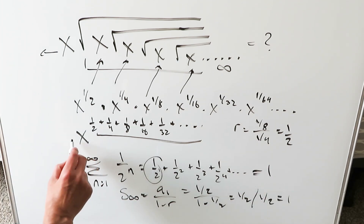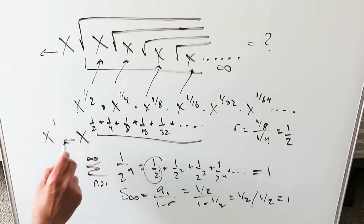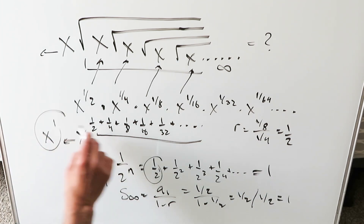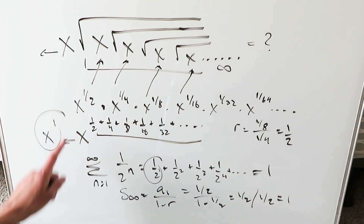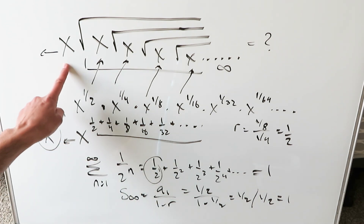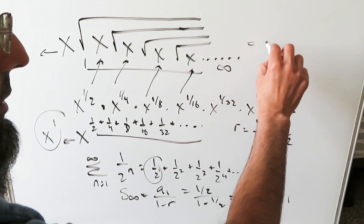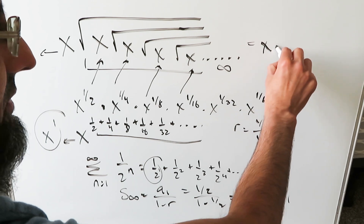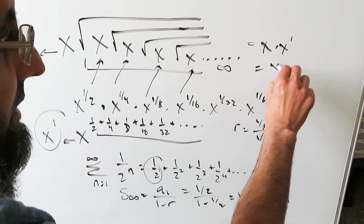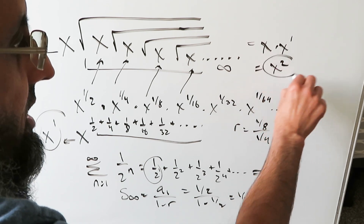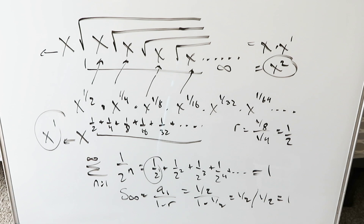That tells me I am looking at x to the power of 1. All of the embedded roots combined equal x to the power of 1. Now, coming back to the x sitting outside, I have x times x to the power of 1. My end result is x squared. All of this right here is equal to x squared.